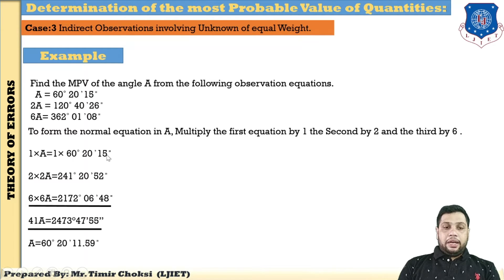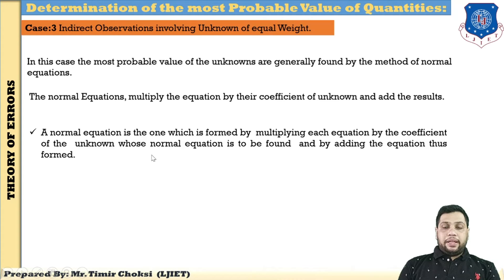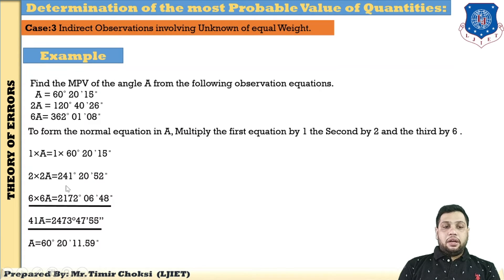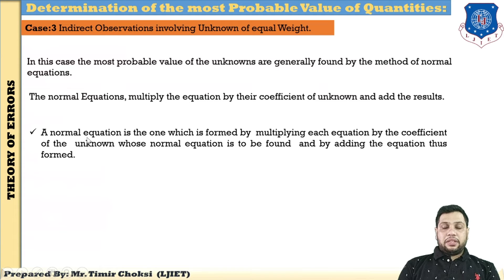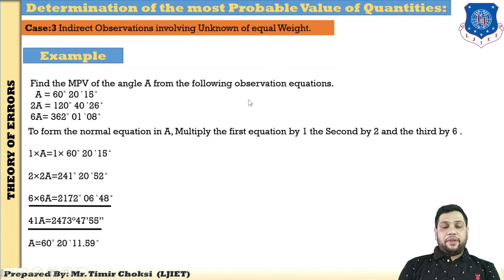After multiplying by the coefficients and adding the equations, we get the normal equation: 1a + 4a + 36a = 41a equals 2473°47'55". Dividing by 41, the answer is A = 60°20'11.59". This is the most probable value of the angle for indirect observation of equal weight.